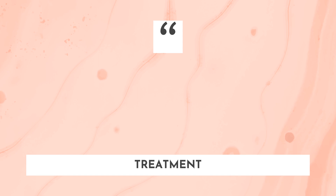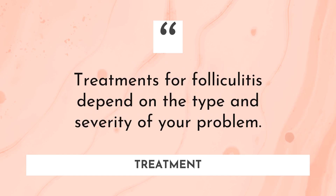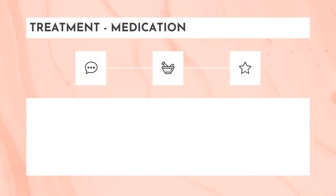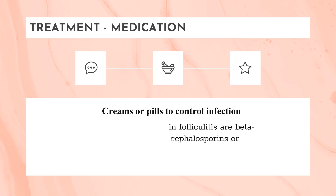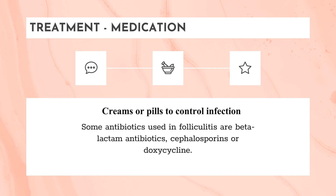Treatment for folliculitis depends on the type and severity of the condition. Medications include: first, creams or pills to control infection. For bacterial folliculitis, a doctor may prescribe an antibiotic cream, lotion, or gel. Antibiotics are not routinely used, but for severe or recurrent infections the doctor may prescribe them. Antibiotics used include beta-lactam antibiotics, cephalosporins, and doxycycline.